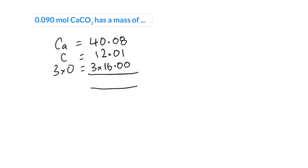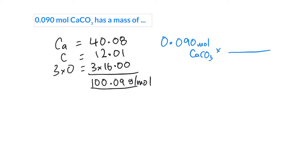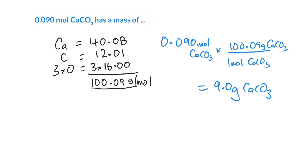The molar mass of calcium carbonate comes out to 100.09 grams per mole. Now we run the final conversion: 0.090 moles of calcium carbonate, with one mole on the bottom and 100.09 grams on top. Punching this into the calculator gives 9.0 grams of calcium carbonate — that's how much is necessary to neutralize all the hydrochloric acid in our stomach.